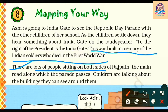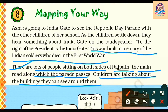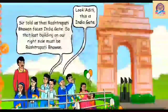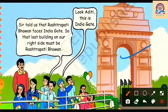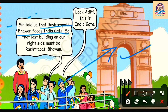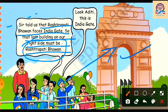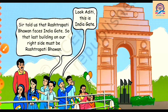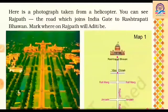There are lots of people sitting on both sides of Rajpath, which is the main road along which the parade passes. The children are talking about the buildings they can see. One student points and says, 'Look Aditi, this is India Gate,' while another girl says, 'Sir told us that Rashtrapati Bhavan faces India Gate, so that last building on our right side must be Rashtrapati Bhavan.' Here they are giving us the direction — to the right of India Gate we will find Rashtrapati Bhavan on the map.